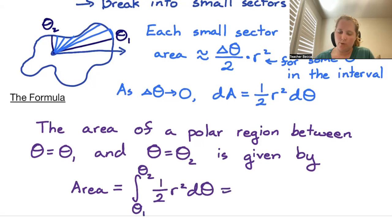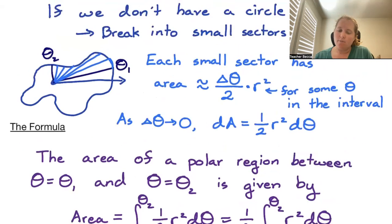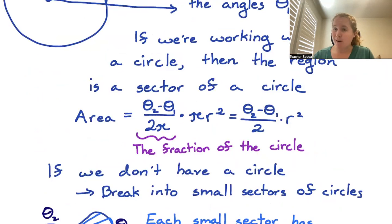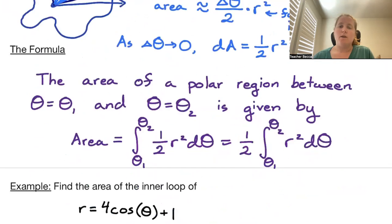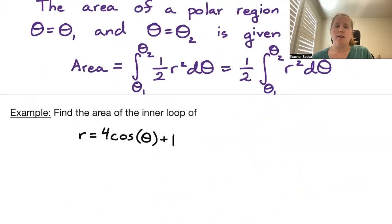Piecing together all these little slivers, the area of a polar region between theta equals theta one and theta equals theta two is given by the definite integral from theta one to theta two of one half r squared d theta. We can pull the one half out: area equals one half times the definite integral from theta one to theta two of r squared d theta. The pi's canceled out from the sector fraction, and the change in theta becomes our d theta.